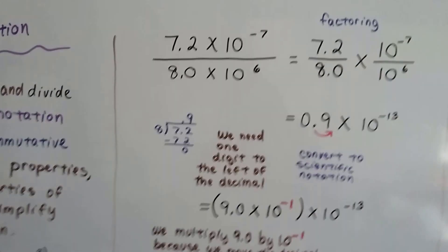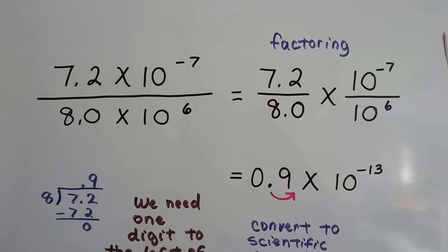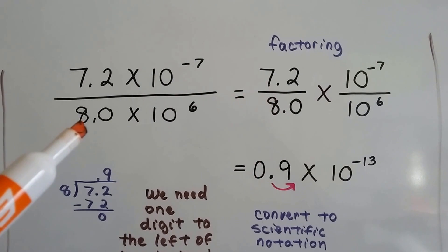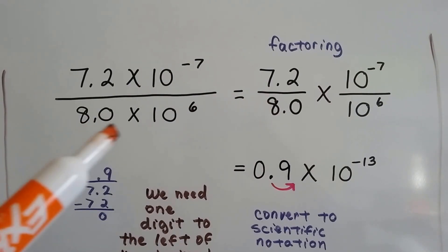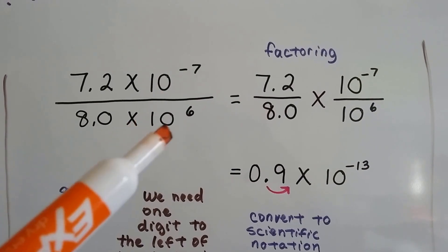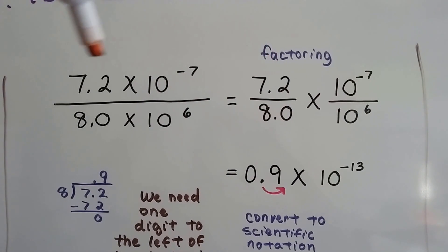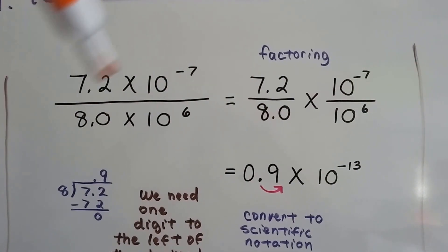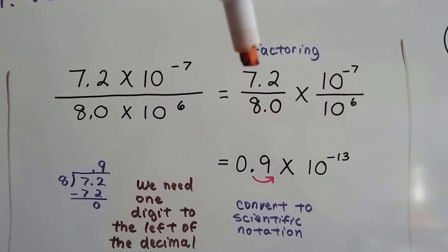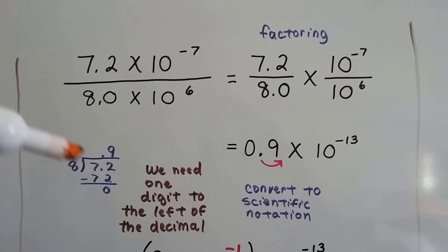Let's take a look at a division example. We've got 7.2 times 10 to the negative seventh over 8.0 — I wrote the decimal place to make it clear — times 10 to the sixth. Factoring, we split the coefficients away from the powers of 10, and 7.2 divided by 8 gives us 0.9.